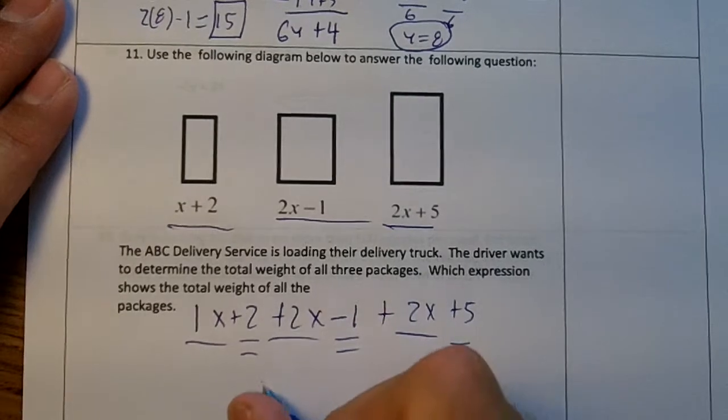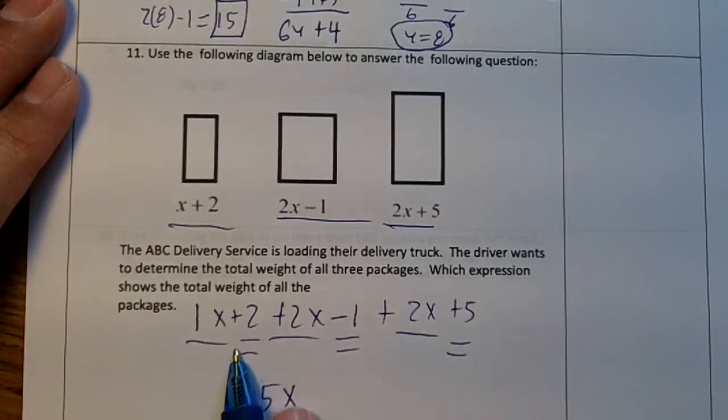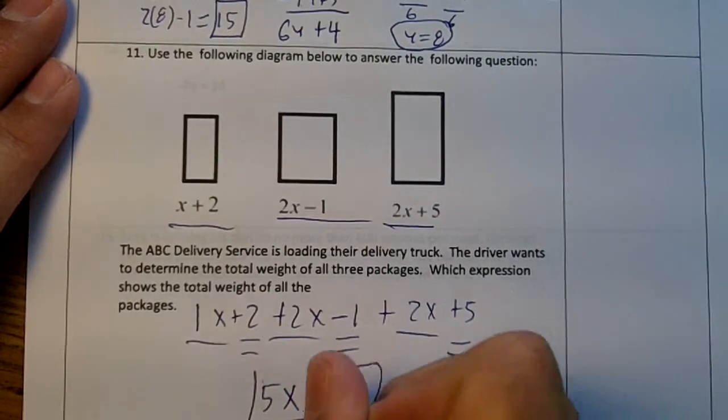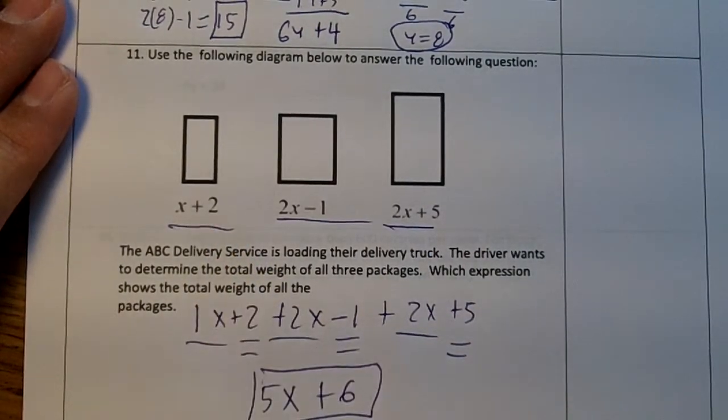So 1x plus 2x plus 2x is 5x. 2 minus 1 is 1. 1 plus 5 is 6. So 5x plus 6 would be the combination of these terms.